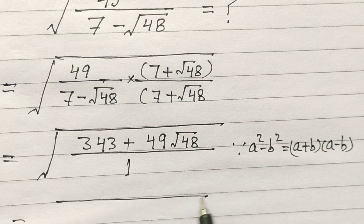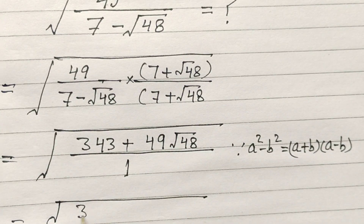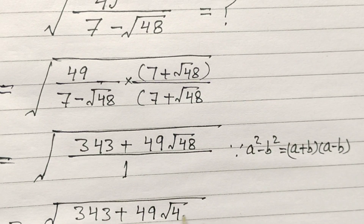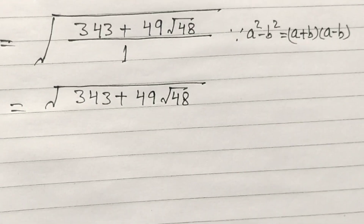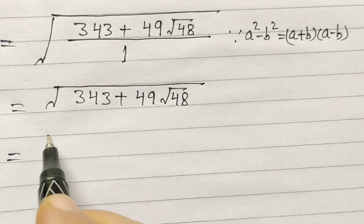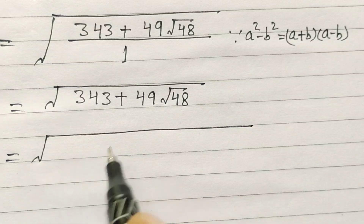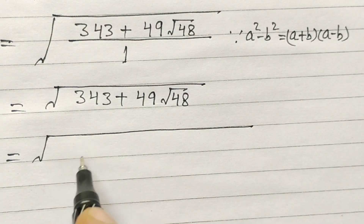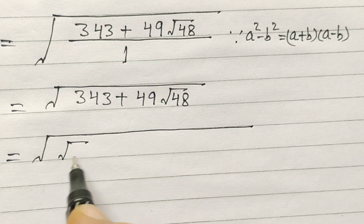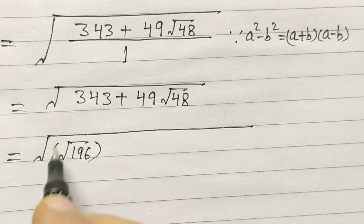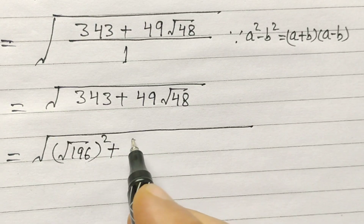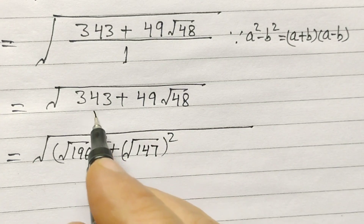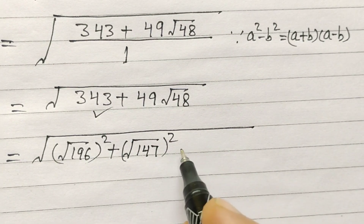Square root of 343 plus 49 square root of 48. Now, square root of 343 can be broken as square root of 196 squared plus square root of 147 squared.